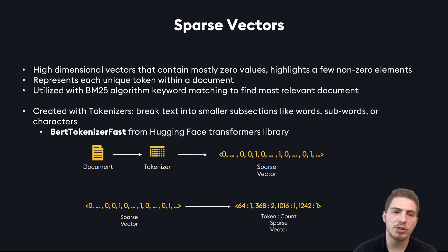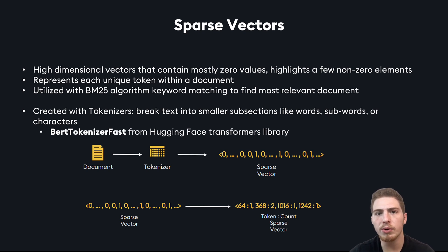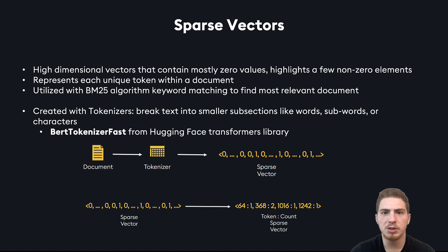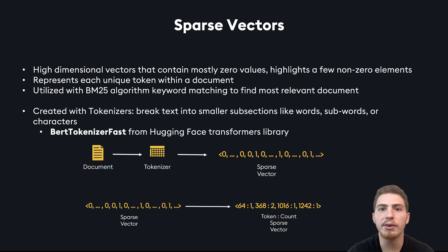Sparse vectors are created with tokenizers. Tokenizers break text into smaller subsections, like words, subwords, or even characters. We use neural tokenizers in many cases — for example, the BERT tokenizer fast can take your document and split it into a lot of different tokens. We use those tokens to create a sparse vector, and then once we have a sparse vector, we could create a mapping between every single unique token and the number of times we counted that token.